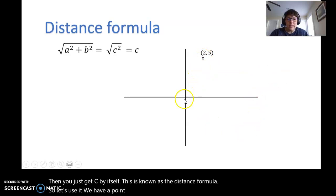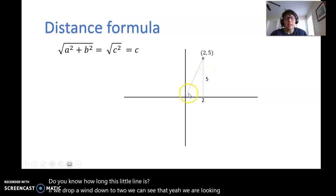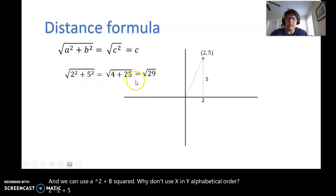So let's use it. We have a point (2,5). What's the distance from the origin? So you want to know how long this line is. Well, if we drop a line down to 2, we can see that we are looking at a triangle and we can use x and y. 2 squared plus 5 squared is 4 plus 25 equals square root of 29.